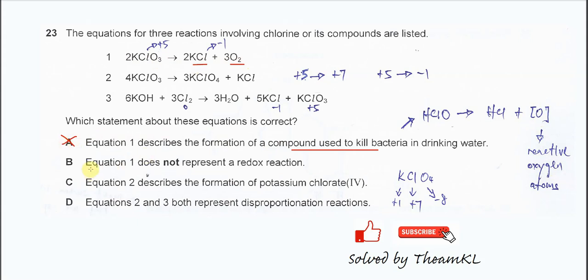Option B: Equation 1 does not represent a redox reaction. From here we can see that the oxidation number of chlorine before the reaction is positive 5, because oxygen is negative 6, potassium is positive 1, so chlorine is positive 5.